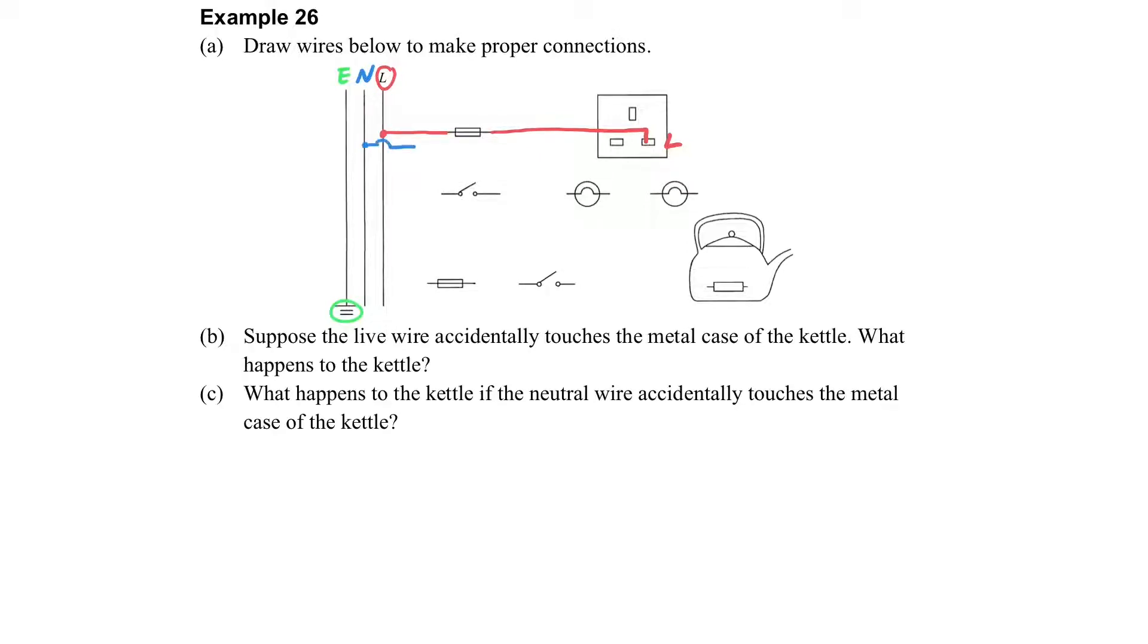And then, the left-hand side of the socket should connect to the neutral wire, and the top should be the earth wire. So the socket should be connected in this way.